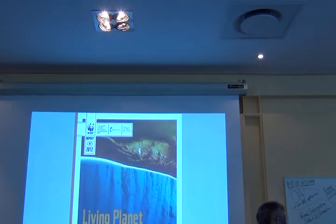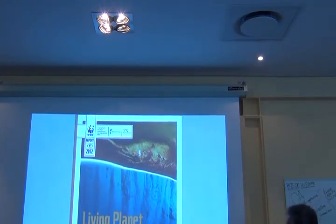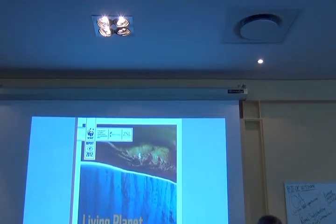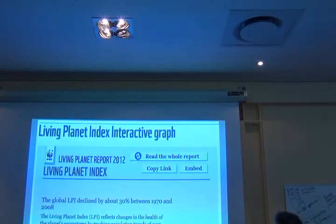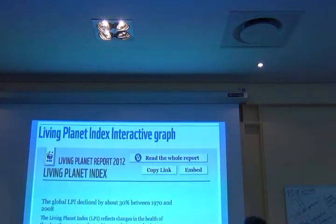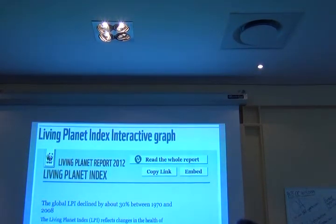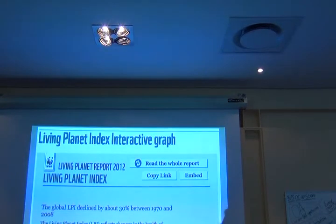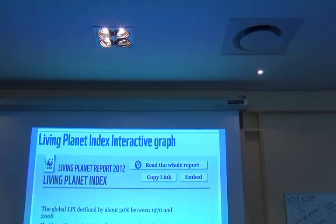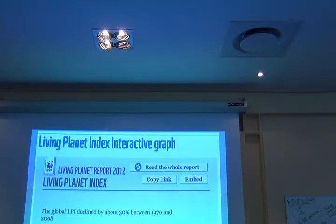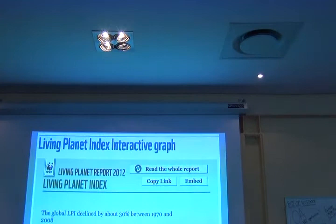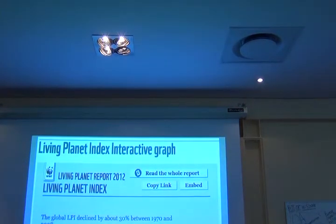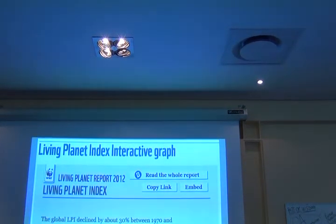Let's look at the metrics being used. I'm going to give you two examples. The first is the Living Planet Index. The global LPI declined by about 30% between 1970 and 2008. The LPI reflects changes in the health of the planet's ecosystems by tracking population trends of more than 2,500 vertebrate species. It's like a stock market index — basically, we've gotten 30% worse. If we started with $1,000, we now have $700.